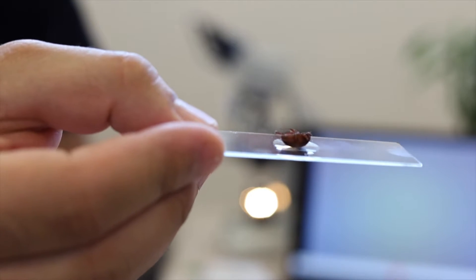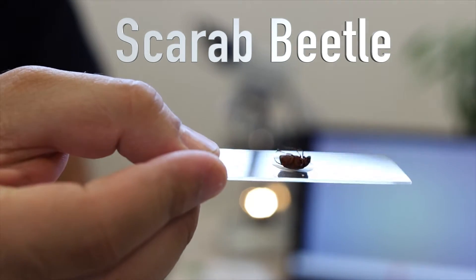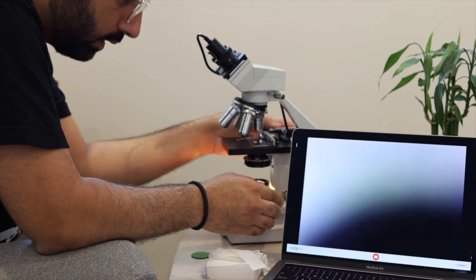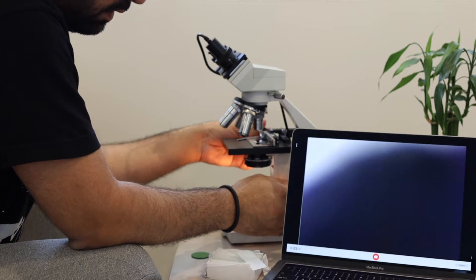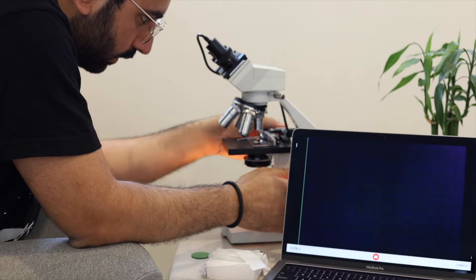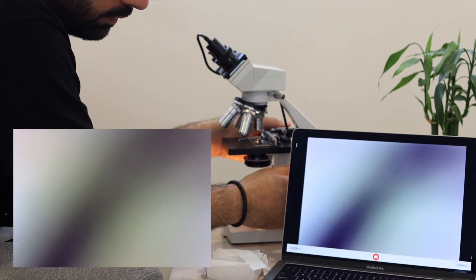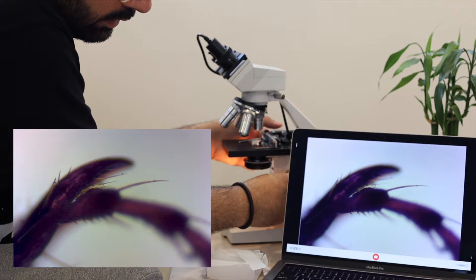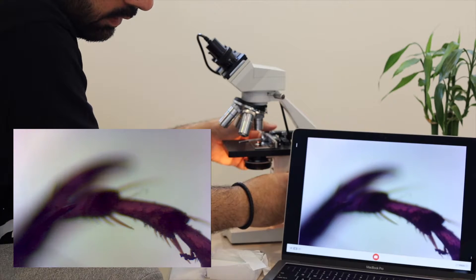Now here comes the fun stuff—a scarab beetle. Let's put it under the microscope. Hang on, can someone bring in a bit more dramatic music please? Okay, here we go. These guys are compact and robust, and right now we're focused on its front legs. And as you can see, they are toothed. I mean, look at these spikes.